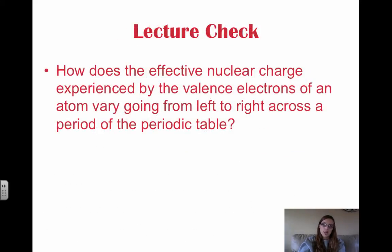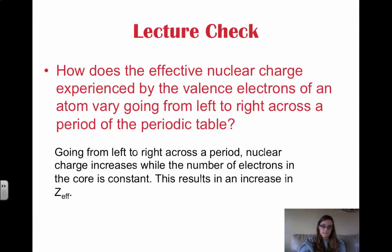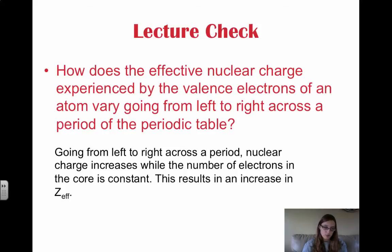So here's a check question: how does the effective nuclear charge experienced by the valence electrons vary going from left to right across a period? Going from left to right across a period, nuclear charge increases while the number of core electrons remains constant, and so this increases the effective nuclear charge.